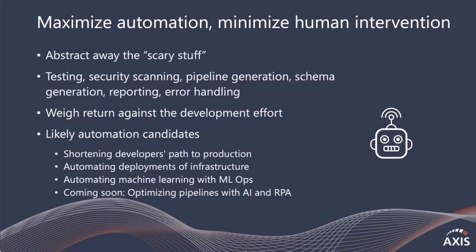Some good examples of automation candidates: anything that shortens a developer's path to production is a good candidate. Deployments of infrastructure as code are another great one. Automating machine learning with MLOps — we'll have another session at the summit on exactly that. And soon you can expect to see even pipeline optimization with AI and RPA, where the pipelines themselves get better through recommendations and automation.